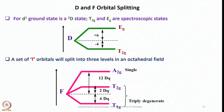Let us now come back to d-d transitions and look into how D and F terms split. For a D¹ ground state, we have a ²D state. Two states result: T₂g and Eg, similar to octahedral splitting, where T₂g is lower in energy and Eg is higher. For a set of F orbitals, they split into three levels in an octahedral field — two triply degenerate and one singlet: T₁g, T₂g, and A₂g.